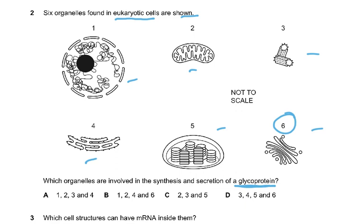We don't need the centrioles, so 3 should not be in it. There is one easy way to figure this out: 3 is in options A, C, and D so those are all wrong, leaving only one choice. The answer is B. Centrioles are not required, and 5 — the chloroplast — is also not required for the secretion of a glycoprotein.